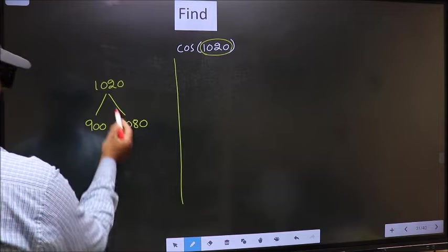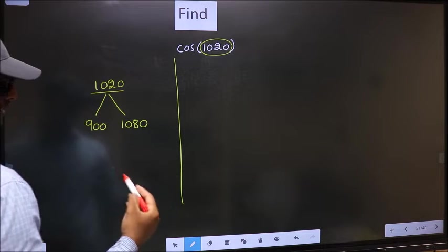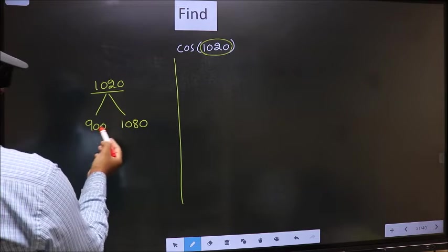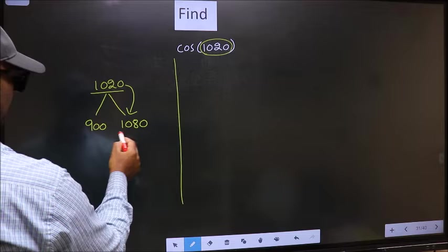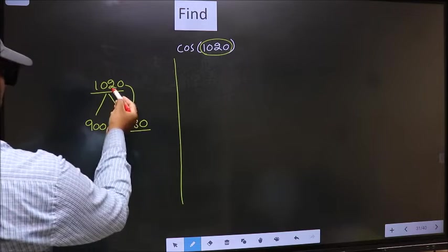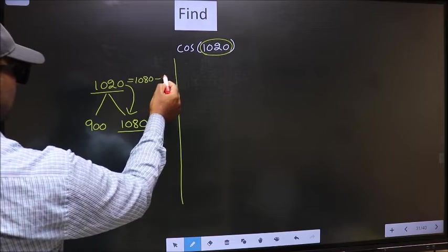Between these two numbers, 1020 lies. Next, 1020 is close to which number? This is close to 1080. So in place of this, we should write 1080-60.